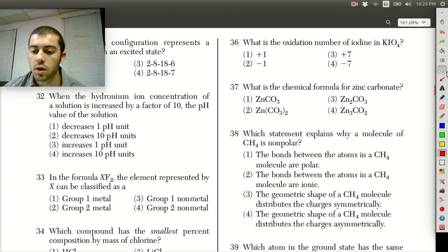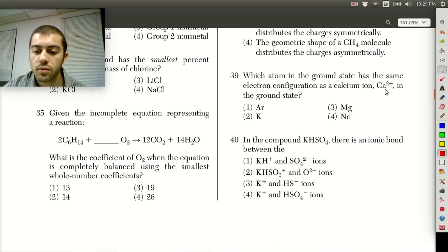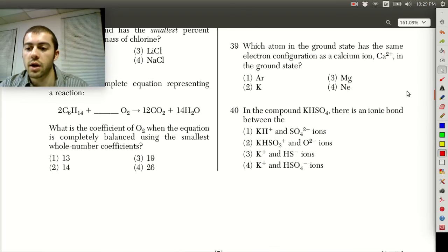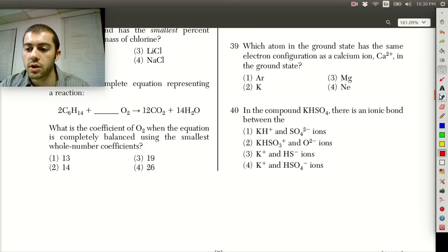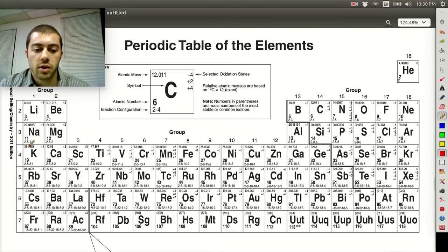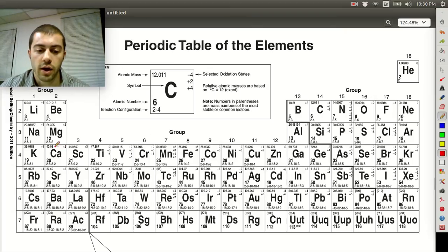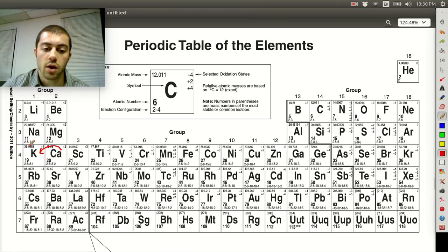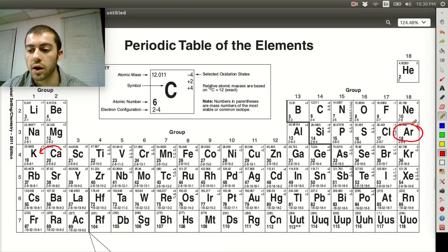Alright, so then looking at question 39. Which atom in the ground state has the same electron configuration as calcium plus two in the ground state? So calcium plus two, we can look at the periodic table over here. Calcium is over here. If it's plus two, that means it's lost two electrons. So if it loses one electron, then it gets bumped to this electron configuration of potassium. If it loses then another electron to make itself plus two, then it gets this argon configuration.